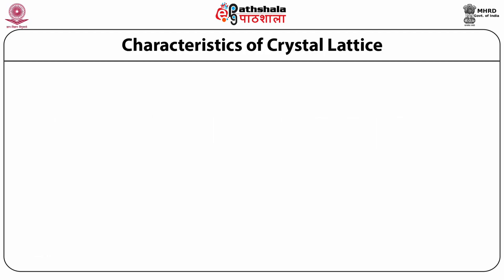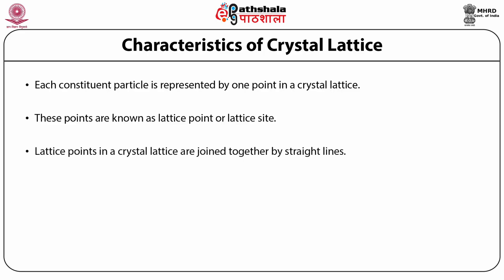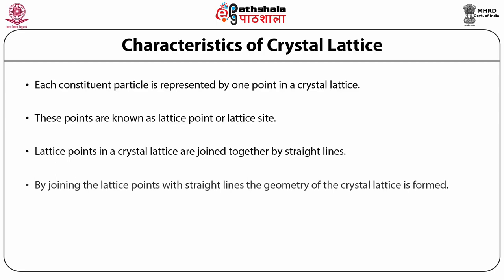About the characteristics of a crystal lattice: each constituent particle is represented by one point, known as a lattice point or lattice site. Lattice points in a crystal lattice are joined together by straight lines, and by joining these points, the geometry of the crystal lattice is formed.